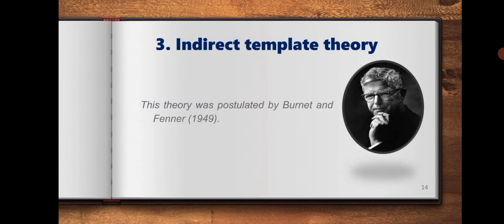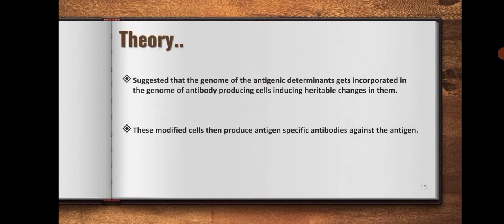Next is the indirect template theory. This theory was postulated by Bernhard and Fanner in 1949. The theory suggested that the genome of the antigenic determinants gets incorporated in the genome of antibody producing cells, inducing heritable changes in them. These modified cells then produce antigen-specific antibodies against the antigen.